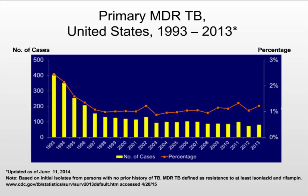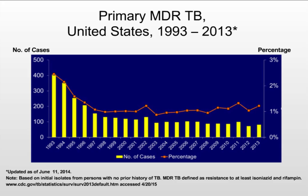Multidrug-resistant tuberculosis has a strict definition: resistance to isoniazid (INH) and rifampin, the two first-line medications used in combination with pyrazinamide and ethambutol. In 1993 there was quite a high rate of MDR-TB. There was a small increase in 2002, again in 2011, fewer cases in 2012, and another small increase in 2013. Overall it has been on a steady decline with year-to-year variations.